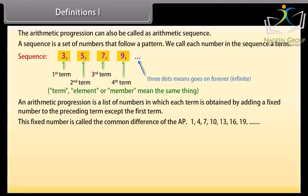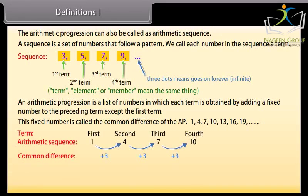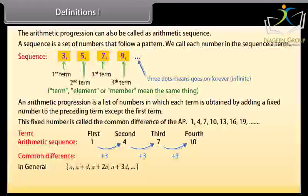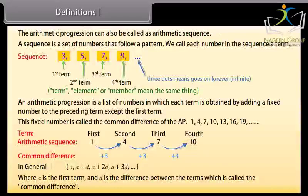Look at this sequence. We can see here that the common difference is 3. In general, we can write an arithmetic sequence like this: A, A plus D, A plus 2D, A plus 3D, and so on. Where A is the first term and D is the difference between the terms, which is called the common difference.